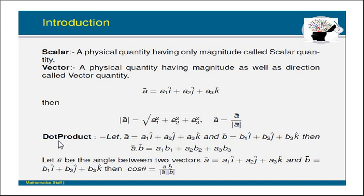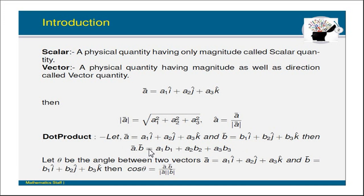Next, we define the dot product. Let a-bar equal a1 i-bar plus a2 j-bar plus a3 k-bar, and b-bar equal b1 i-bar plus b2 j-bar plus b3 k-bar. These are any two vectors. Then the dot product is defined as: a-bar dot b-bar equals a1·b1 plus a2·b2 plus a3·b3.